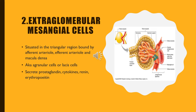The mesangial cells present outside the glomerulus are called extraglomerular mesangial cells. They are situated in the triangular space formed by the afferent and efferent arterioles and the macula densa. They are also known as agranular cells or Lacis cells. They secrete prostaglandins, cytokines, and some amount of renin and erythropoietin.